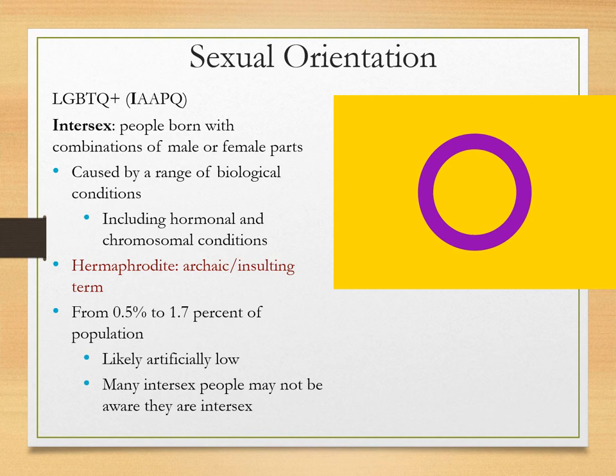The term hermaphrodite is used to describe certain types of animals. It actually isn't even accurate for humans. A hermaphroditic organism is something like a certain fish, or invertebrates such as slugs and worms — organisms that can either shift their sex when needed for reproductive reasons, or they produce both male and female cells, so eggs or sperm. Neither of those apply to people who are intersex. So it is not only dehumanizing, but it's biologically completely inaccurate.